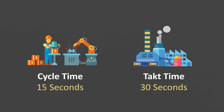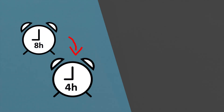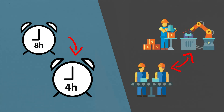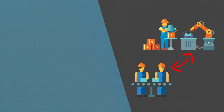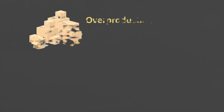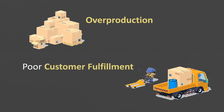Therefore, it is most important for the shop floor to align the cycle time to the takt time, either by decreasing the available working time through proper planning of the workforce, or by shifting work contents between different stations or products. As long as the cycle time does not match the takt time, you either cause overproduction or fail to fulfill the customer request.